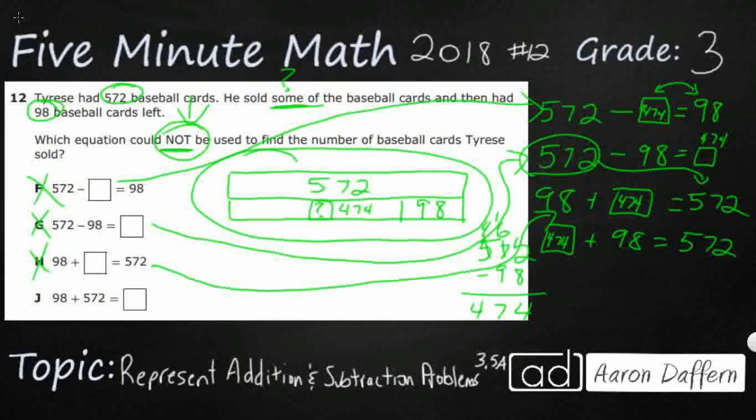So yeah, this last one, it's got the 572 in the wrong spot. And look, if we were to put 474 in that box, that just wouldn't work, because obviously the 572 is already larger than 474. Our answer is J.